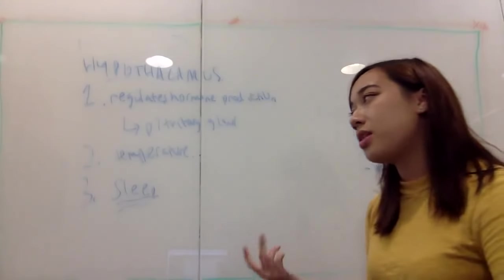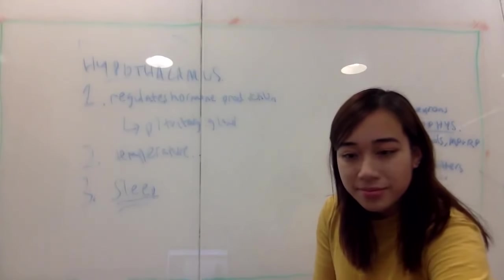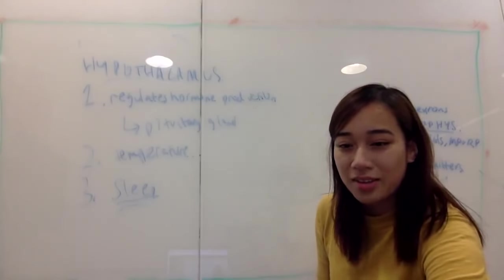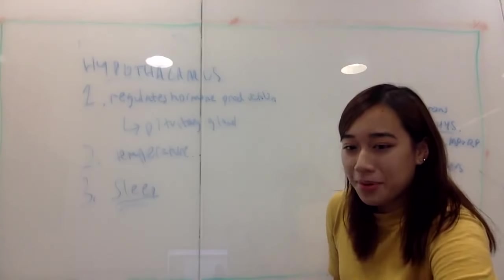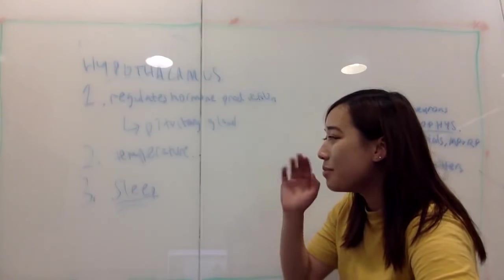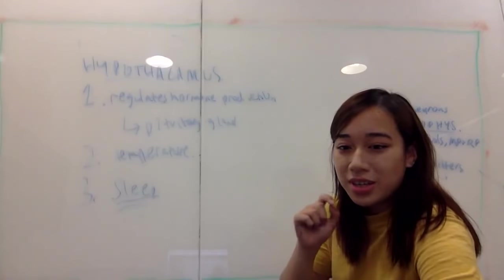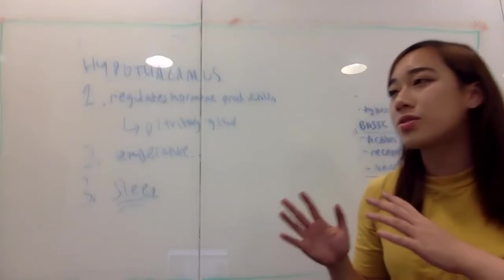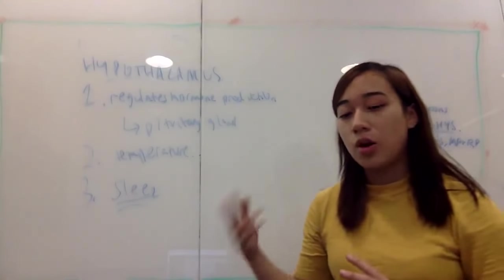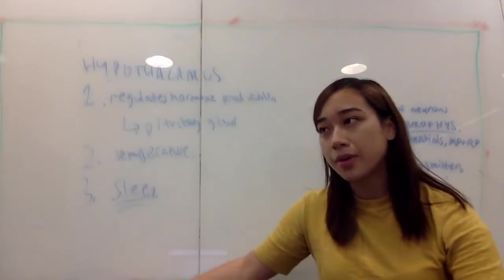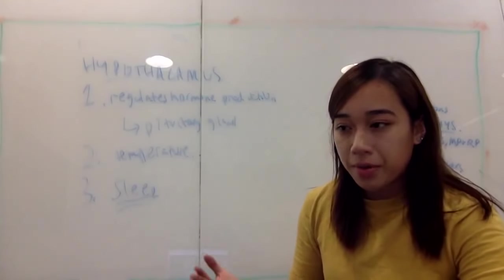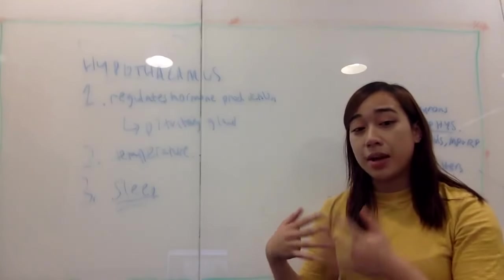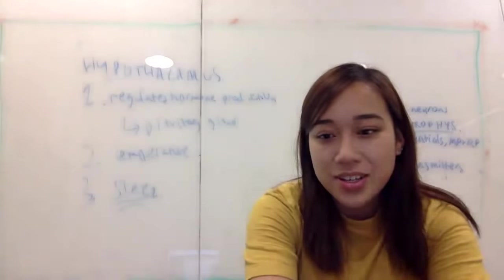The receptor involved in long-term potentiation is the NMDA receptor. Long-term potentiation relates to the strength of memory — specifically the strength of synapses that form — and this is related to the NMDA receptor. You don't need to remember the full name; NMDA is sufficient for the exam.